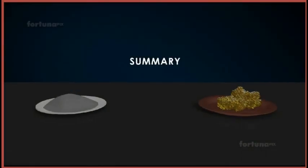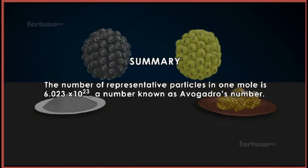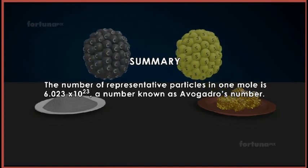Summary. The number of representative particles in one mole is 6.023 times 10 to the power of 23, a number known as Avogadro's number. The mass of one mole of an element is its molar mass.